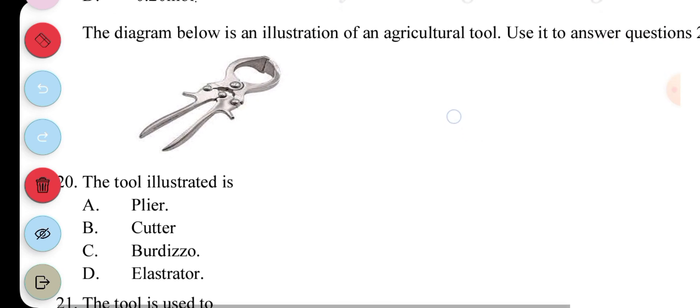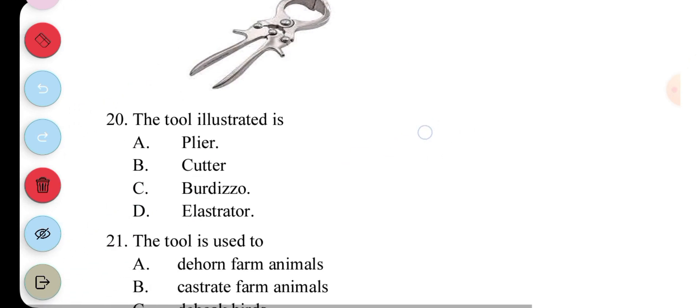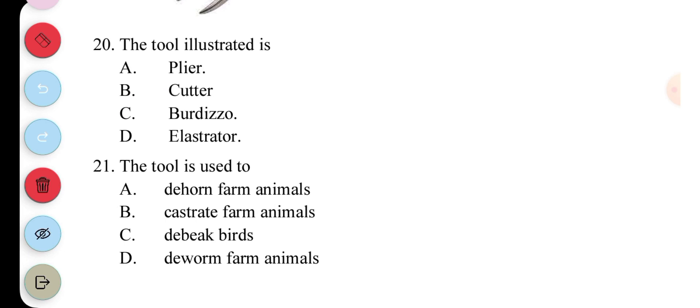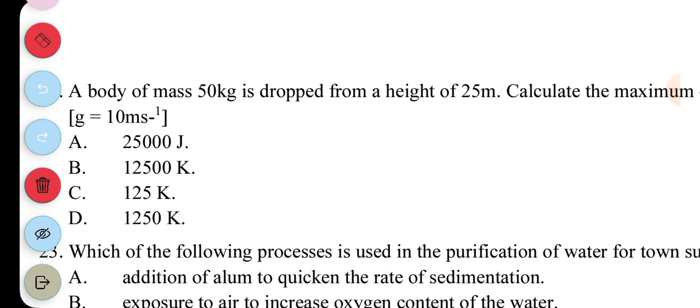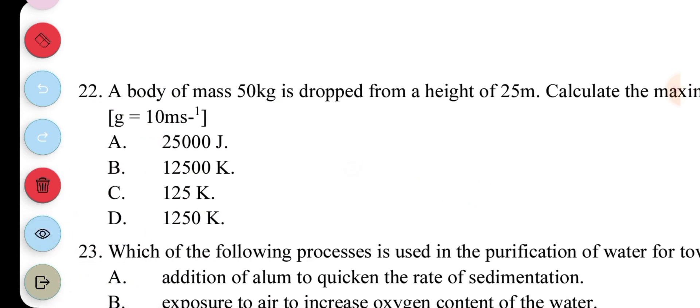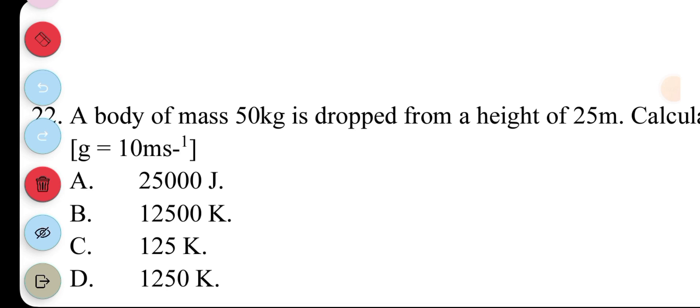Question 20. The diagram below is an illustration of an agricultural tool. So, we used to answer questions 20 and 21. So, the tool illustrated is actually a burdizzo. So, the answer is C. And the 21 is asking what the tool is used for. It's actually used for castrating animals. So, it's B. So, the next question. The body of mass, 50 kilograms, is dropped from a height of 25 meters. Calculate the maximum energy of the body. Now, with question 22, we are being asked to calculate energy, which has to do with work. The work. Work then equals force times distance. Work equals force times distance. Now, to get the force, you need to multiply acceleration due to gravity by 50 kilograms. So, you are going to have 500 newton. Multiply by the distance is 25. So, after doing a multiplication, you have 12,500. But, there's an issue here. It's not supposed to be K. It's supposed to be J. So, you have 12,500. So the answer is B.